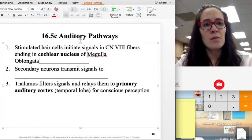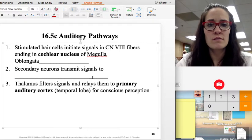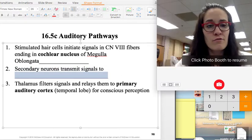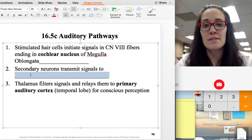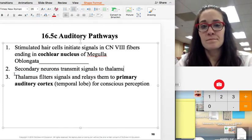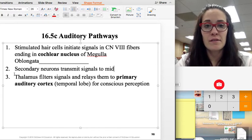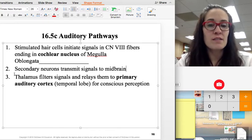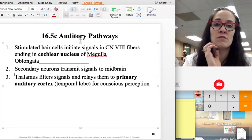The medulla oblongata will then send those, the next neuron from the medulla oblongata will send it to the thalamus. Oops, I meant midbrain. The midbrain will then send the message to the thalamus.